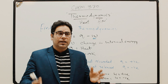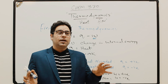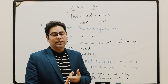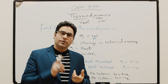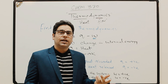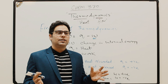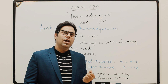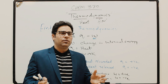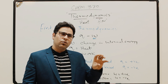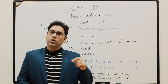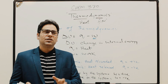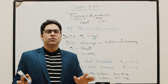Internal energy is the total amount of energy contained in a closed system — it may be kinetic energy plus potential energy plus electrical energy. The sum of all these energies within a closed system is the internal energy. We need to figure out when Q is positive, when Q is negative, when W is positive, when W is negative.